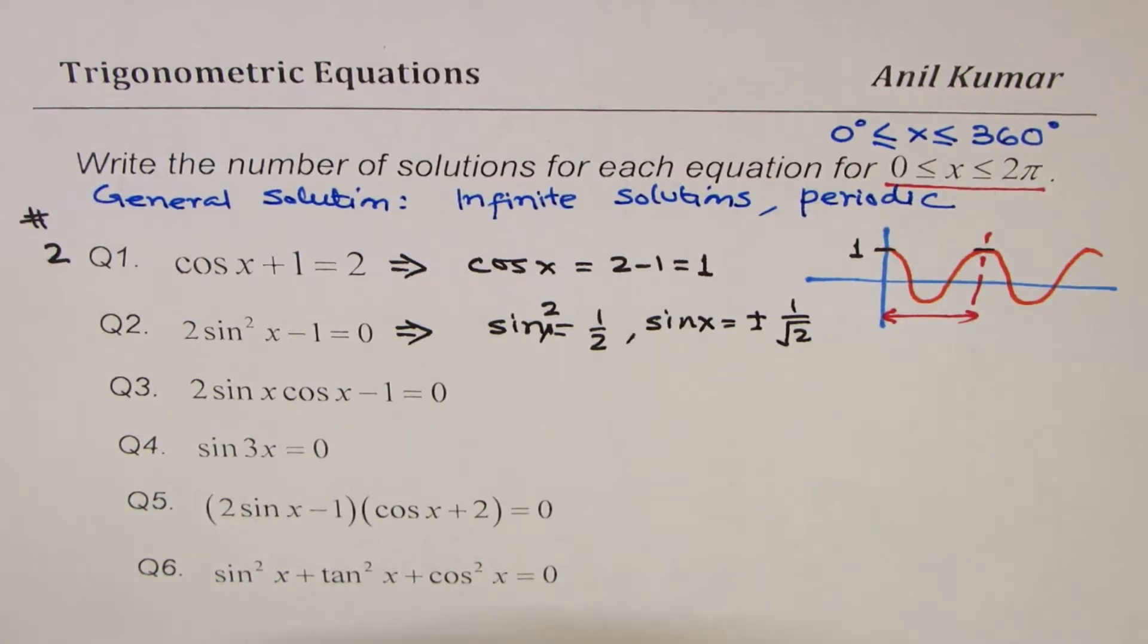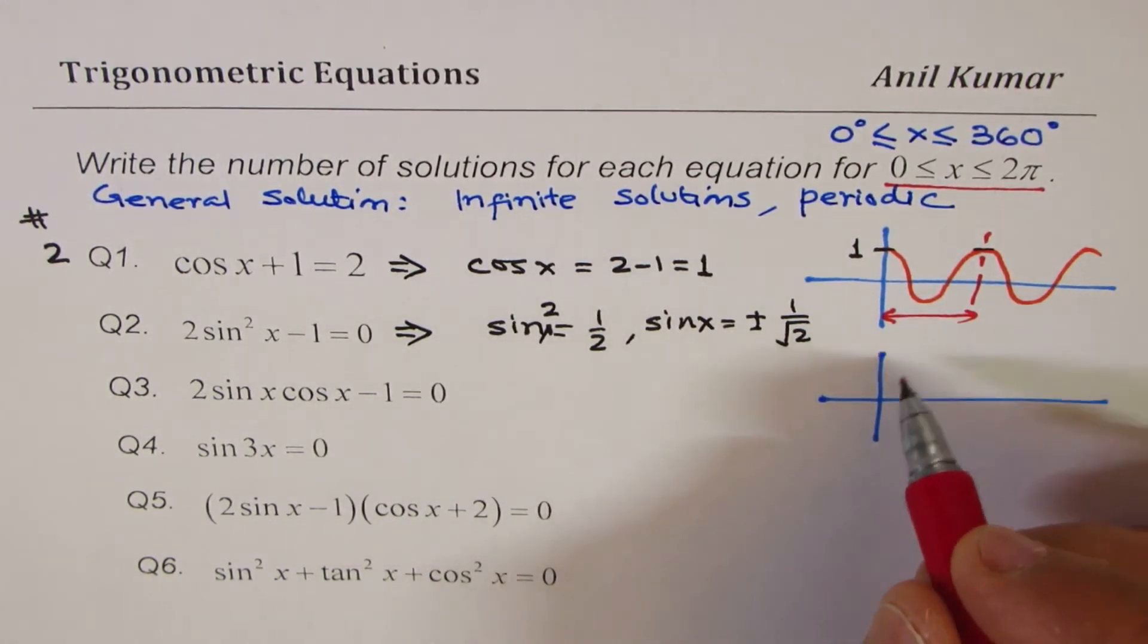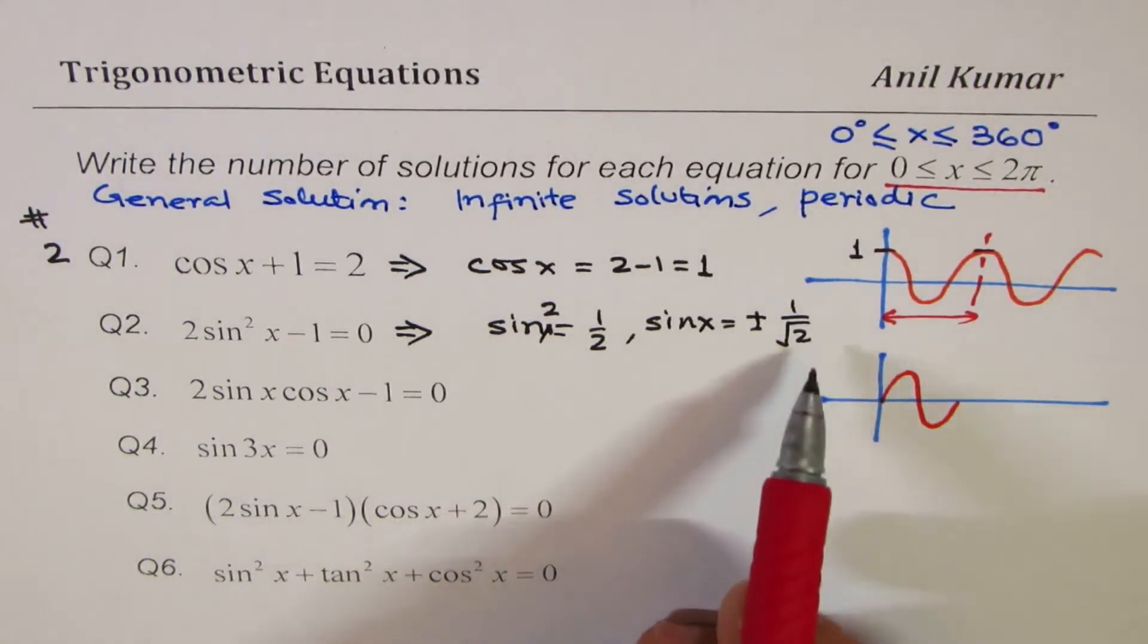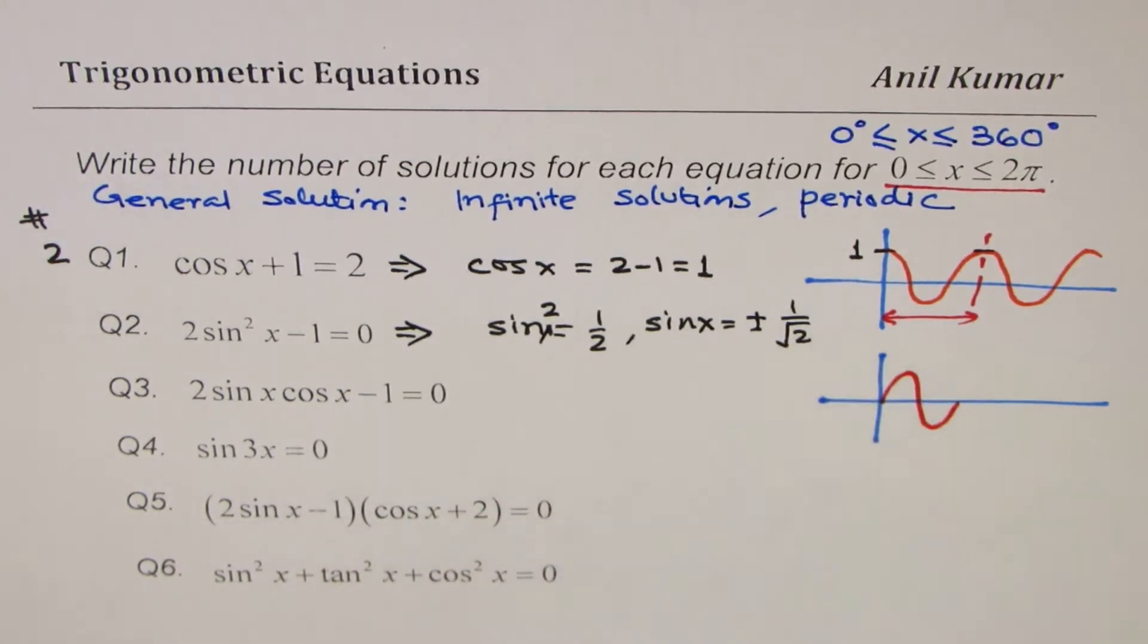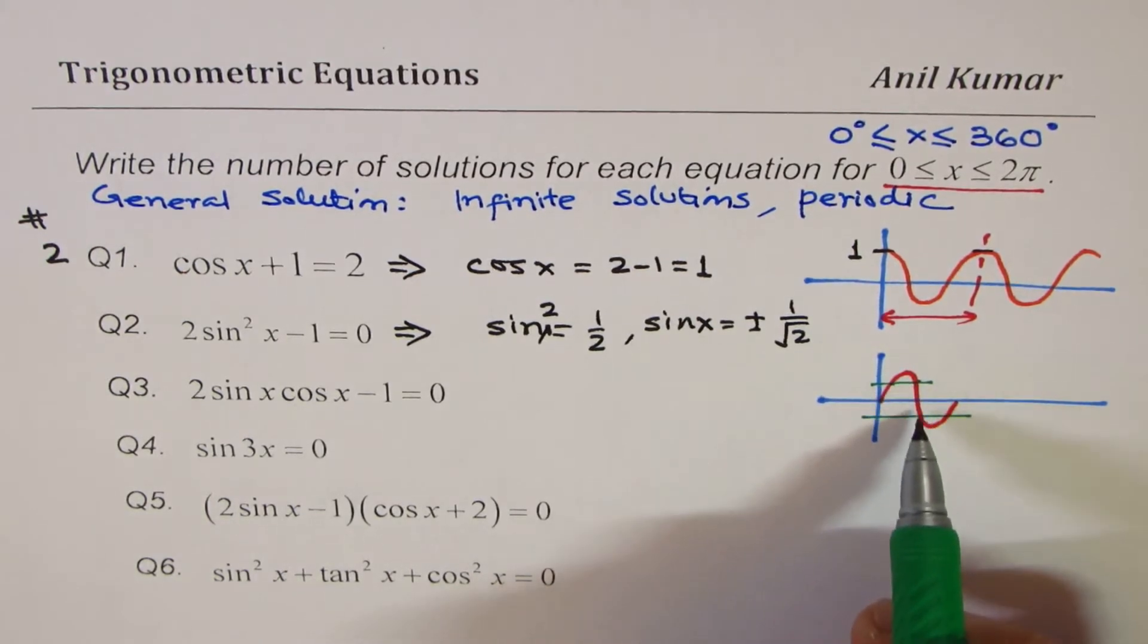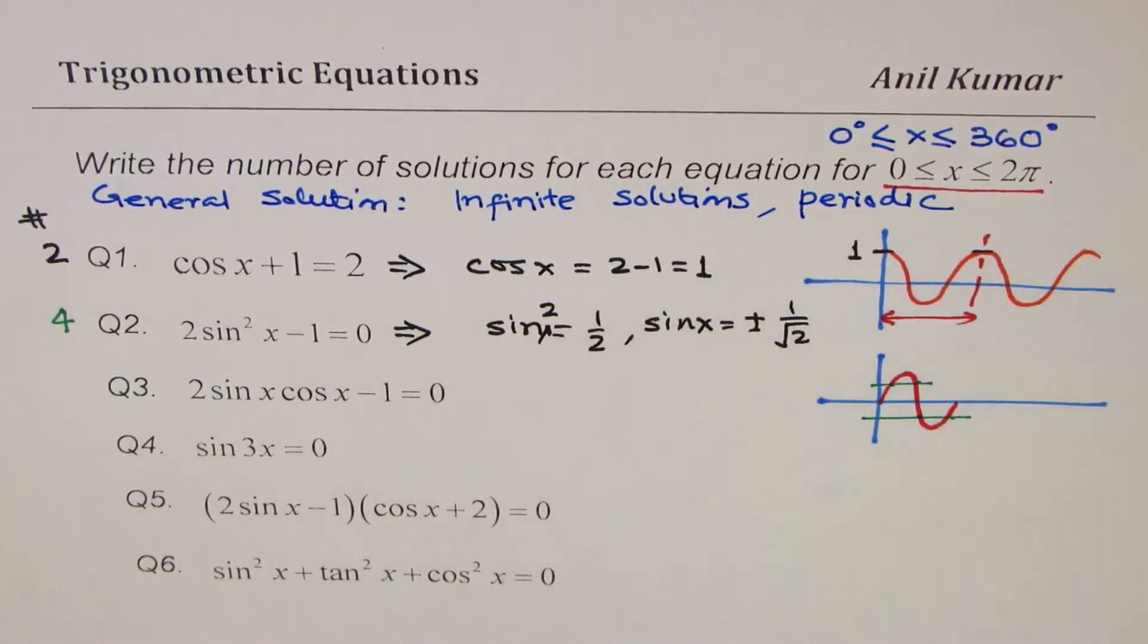Now, sin x function can be sketched like what? It starts with 0. Let me sketch a sin x function here. It starts with 0, and it is kind of like this. We are looking for some value which is positive as well as negative, and is within plus minus 1. Clearly, we could have four solutions. You can see this, four solutions. We have number of solutions as four.